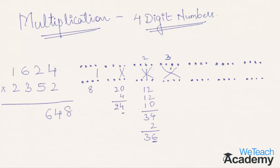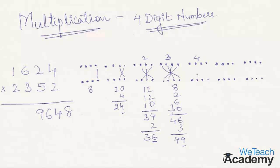In step four, multiply following the pattern: 4 into 2 is 8, 2 into 1 is 2, 2 into 3 is 6, and 6 into 5 is 30. Summing all gives 46, plus the 3 carried forward gives 49. Write 9 in the final answer and carry 4 forward to the next step.